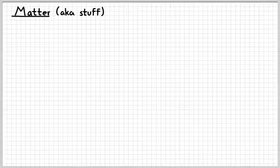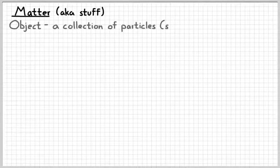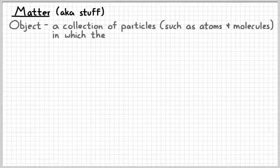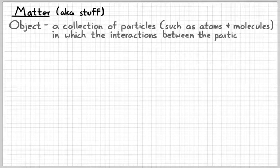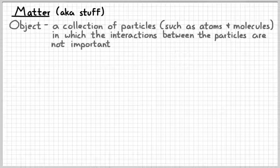It differs a little bit from how you may have treated stuff in chemistry. The first basic idea of how we treat things in physics is that of an object. When we say object, the according to Hoyle definition is a collection of particles. When we think of particles, you may think of atoms and molecules and ions, in which the interaction between those things are not important.